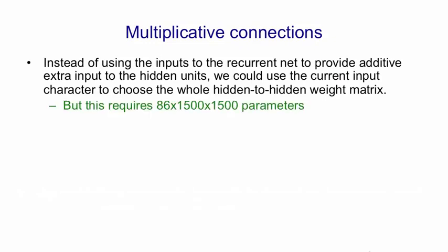Now if we did that in the naive way, we'd have each of the 86 characters define a 1500 by 1500 matrix. And that would be a lot of parameters. If we have that many parameters, the net's likely to overfit, unless we run it on a huge amount of text for which we might not have time.